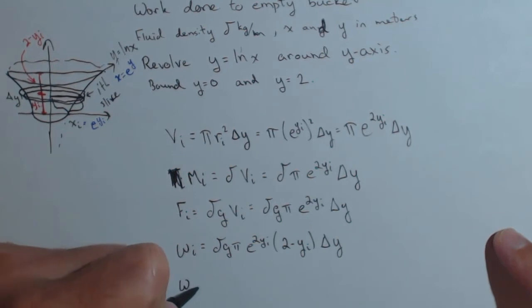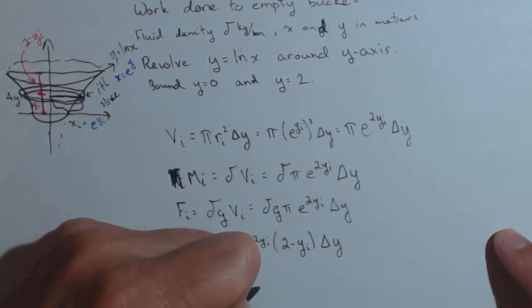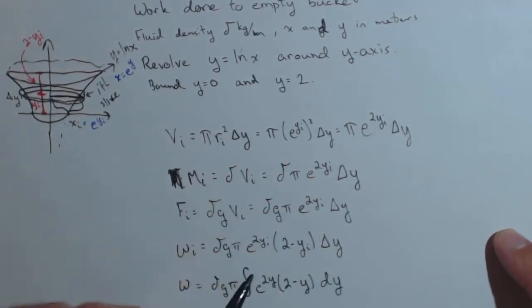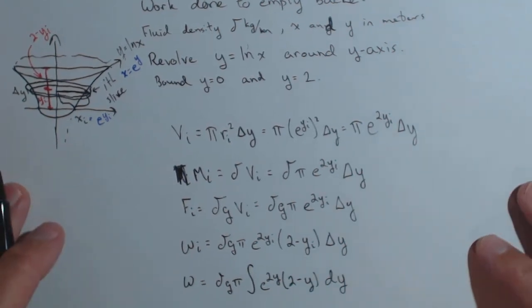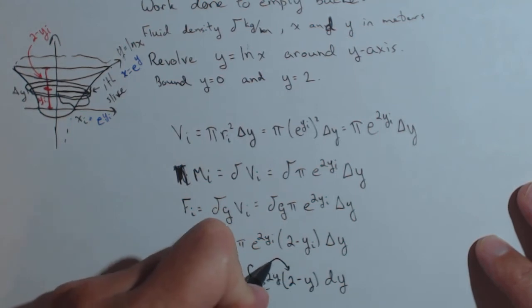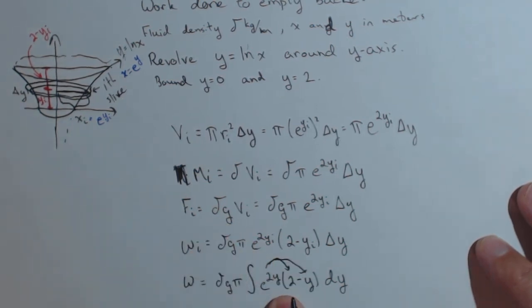Finally, let's compute the work. I'm going to pull these all out; they're all constants: delta*g*pi times the integral of e^(2y)*(2-y) dy. Now, I'm going to leave solving this integral to you. I just wanted you to see how it's set up. Some options for solving: you could distribute the e^(2y). The first integral will be straightforward. The second integral will take one round of integration by parts.